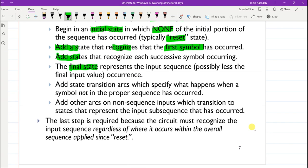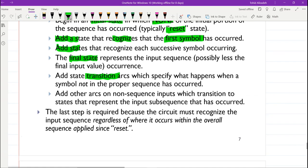We will add the state transition arcs which specify what happens when a symbol not in the proper sequence has occurred. We will see it by going through the example.